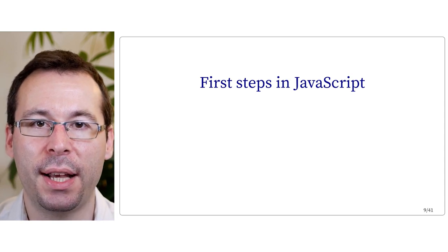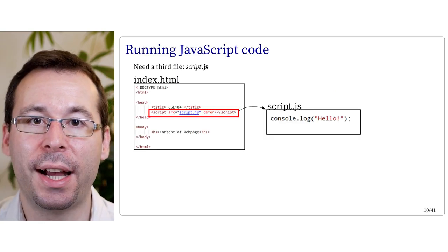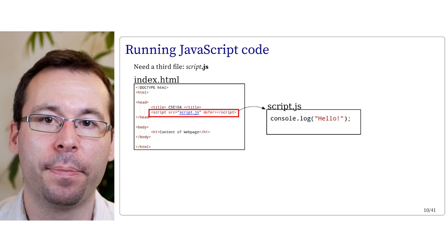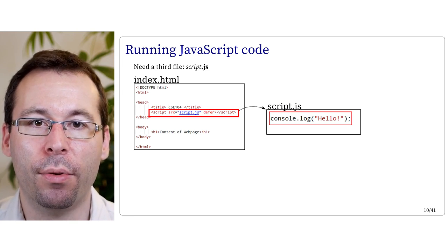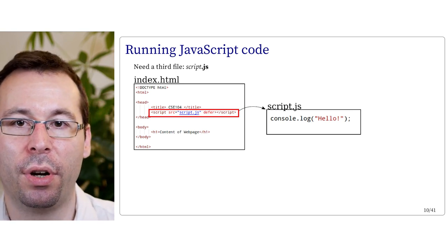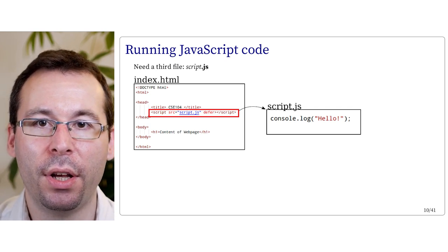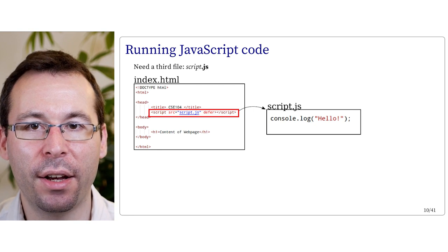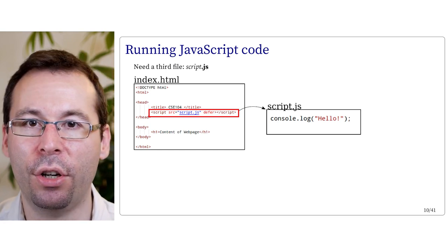Let's see the first steps to run JavaScript code. We need a third type of file — we can call it script.js, where .js is the extension for JavaScript code. In script.js, we can add our code. For instance, let's add console.log('hello'). Then, if you want your webpage to run this code, you have to link the HTML file to script.js by adding a script tag in the header with the source equal to the path of your JavaScript file, with the keyword defer after it, then close the script tag.